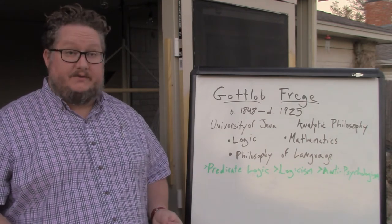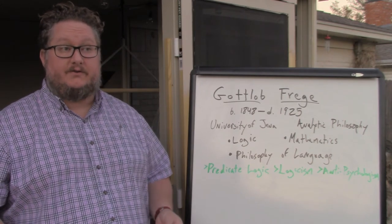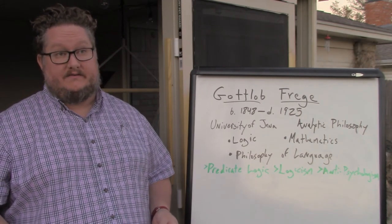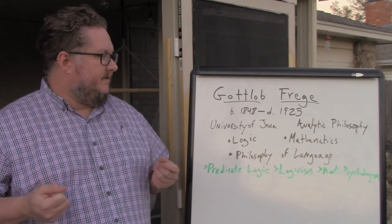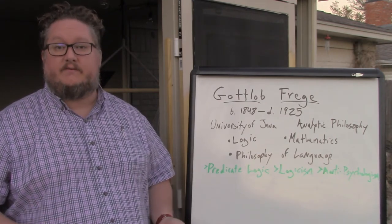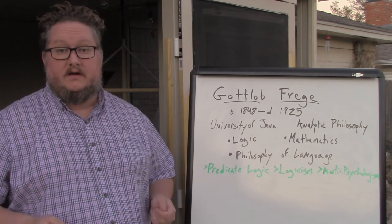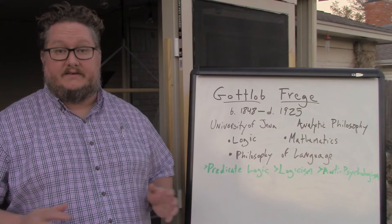Frege critiqued Husserl, wrote a critique and published it about Husserl's philosophy of arithmetic. Frege and Husserl also wrote letters to each other and shared drafts of work with each other. Frege convinced Husserl that psychologism was untenable.